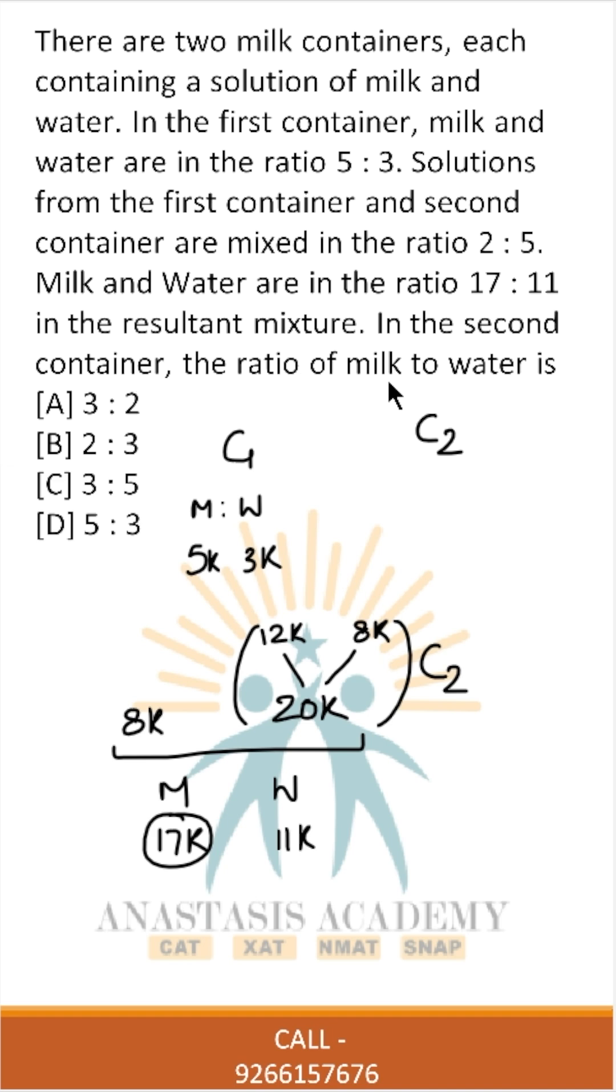In the second container, the ratio of milk to water is 12 is to 8, or the ratio will turn out to be 3 by 2. Option E is the right option.